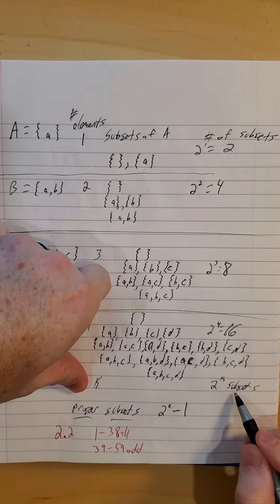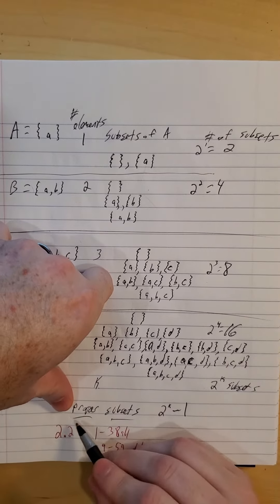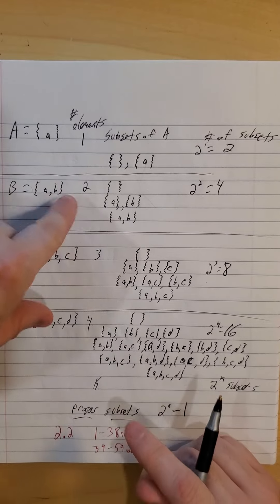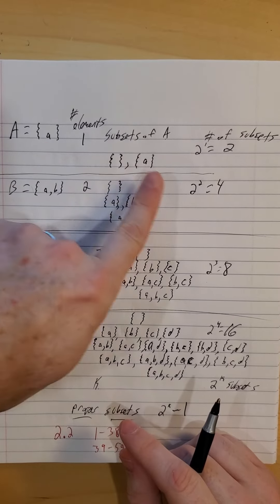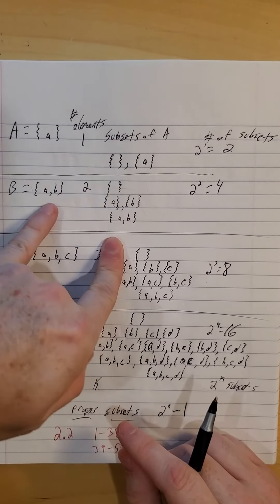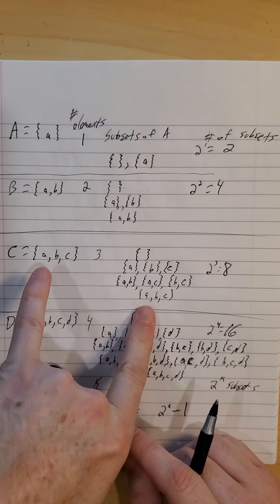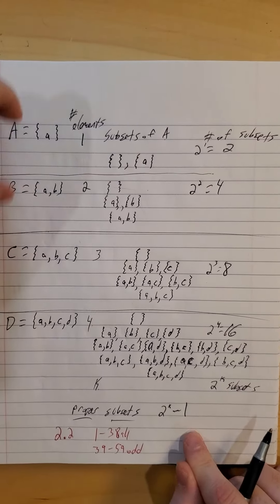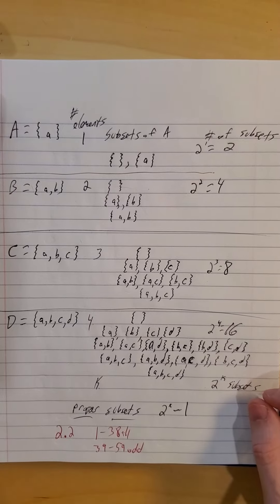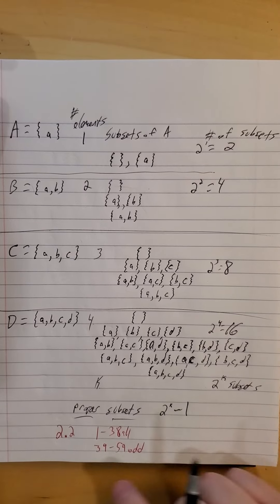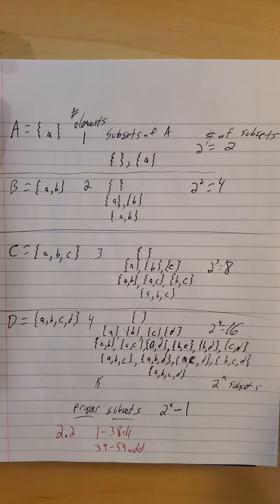K elements, two to the K subsets. If we're talking proper subsets, we would just leave off the one copy that is equal to the original set. So two to the K minus one would be the number of proper subsets.